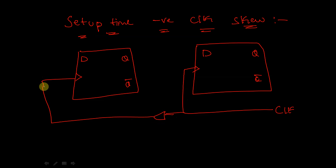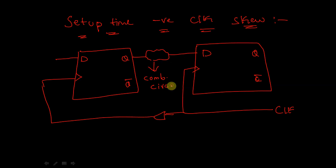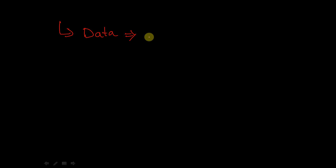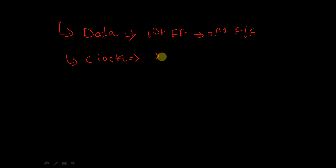The data is first given to the first D flip-flop and then travels through a combinational circuit to reach the second flip-flop. So data flows from the first flip-flop to the second flip-flop, while the clock flows in the opposite direction — from the second flip-flop toward the first flip-flop.